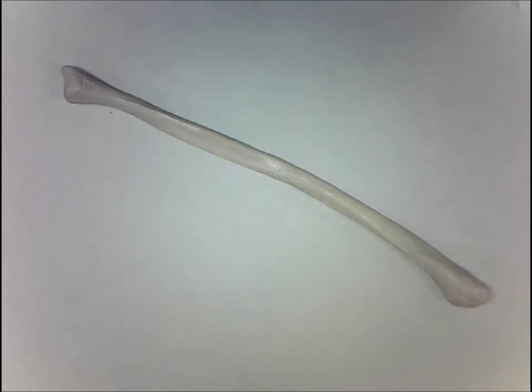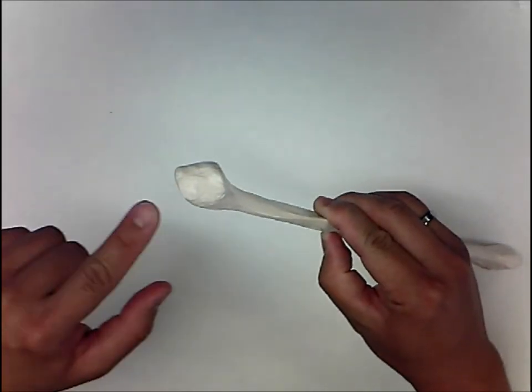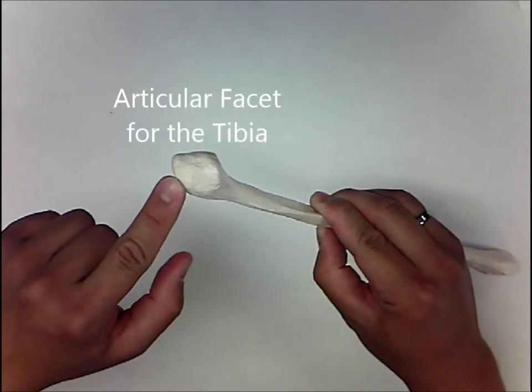Landmarks you need to be able to identify on the fibula. The first landmark is on the distal end of the bone called the head. On the head you have a tiny little surface called the articular facet for the tibia.